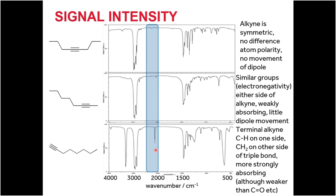So it is not only the bond strength and electronegativity of the groups on either side of the bond that matters, but also the symmetry of the molecule. If a bond has exactly the same functional groups on both sides, that vibration may no longer be infrared active and will not appear in the infrared spectrum. This is a rare phenomenon, but it does occur, and you should be aware of it when analyzing different compounds.